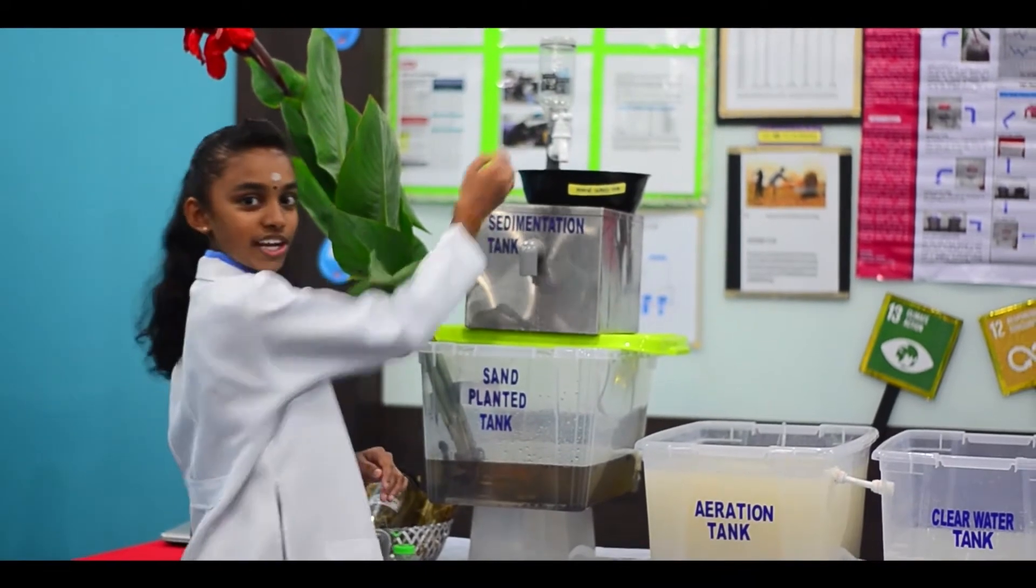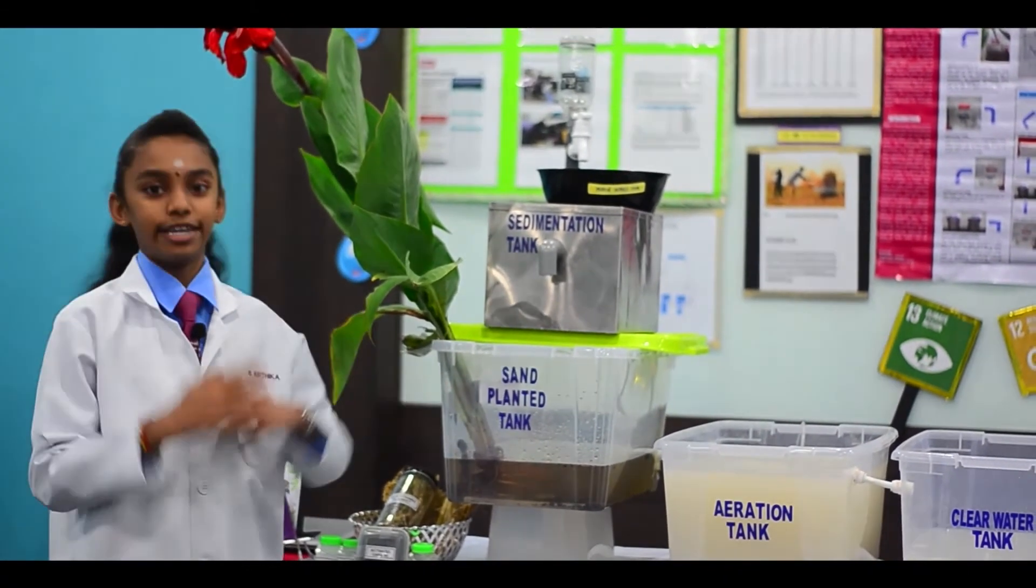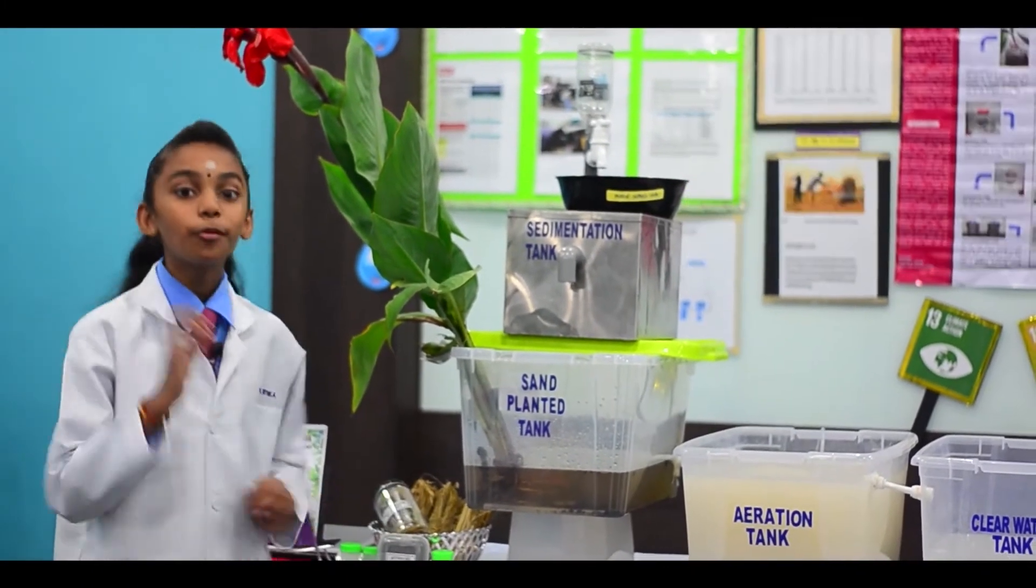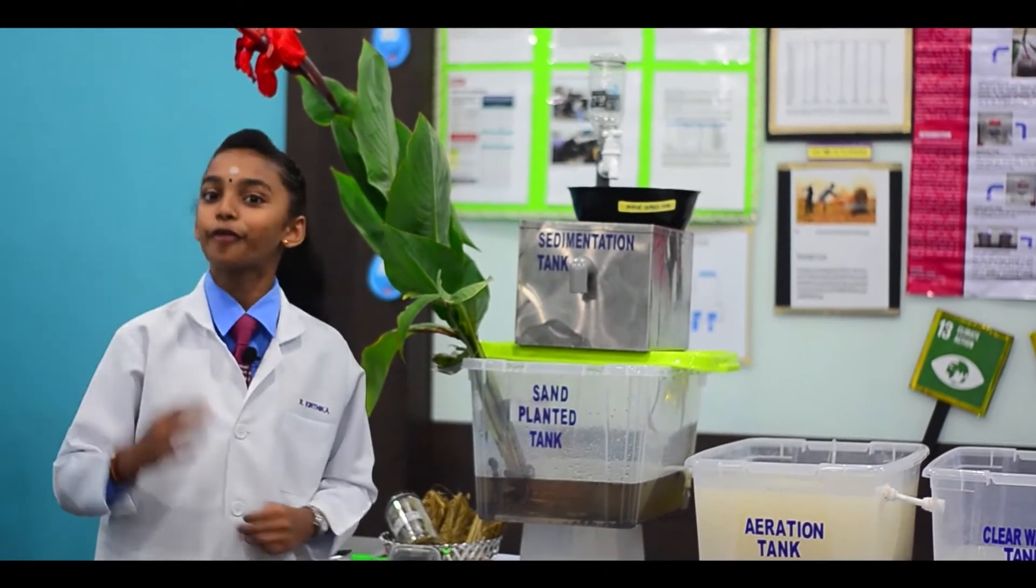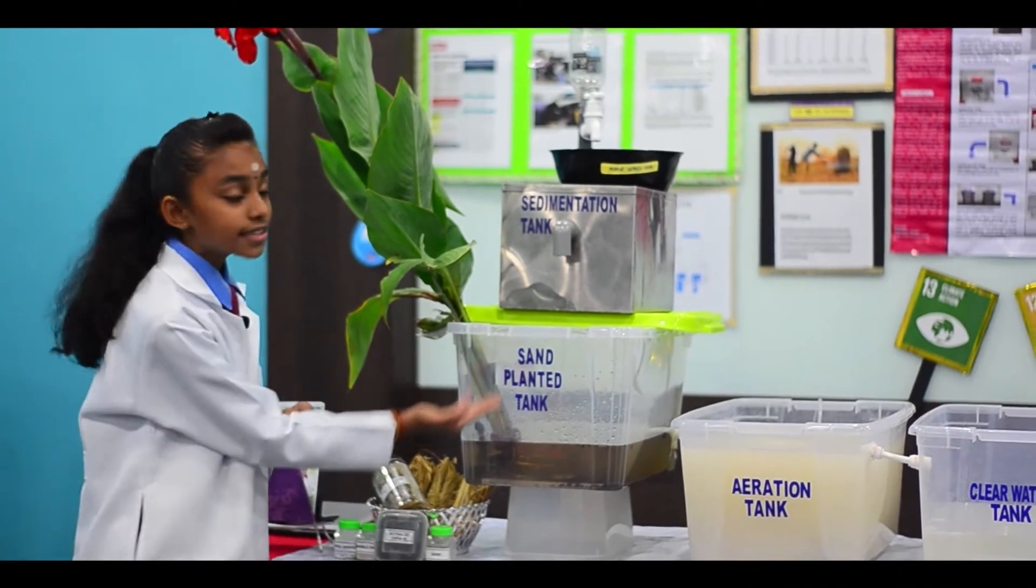We will wash our hands over here and then it will go to the sedimentation tank. In the sedimentation tank, I have used rice straw blanket to hold the tiny food particles in a more economic and biodegradable way. And then by this pipe, it will go to the sand planter tank.